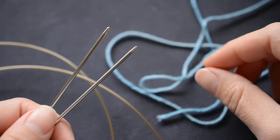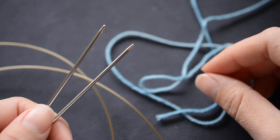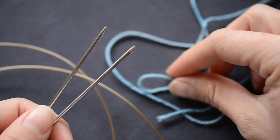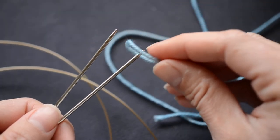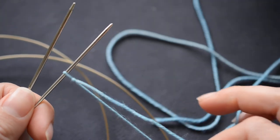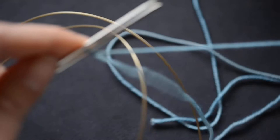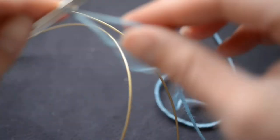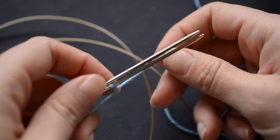Today we're going to cast on the toe of our sock and increase for the toe. First, to cast on, you're going to want to make a slip knot and slide it onto the front circular needle. With your working yarn, so the yarn connected to the ball, you're going to wrap back to front.